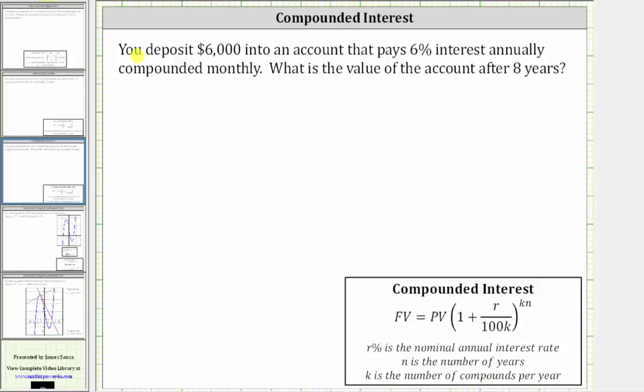So for the given example, the future value is unknown, the present value is the initial deposit of $6,000, and the annual interest rate is 6%, so R is equal to 6.